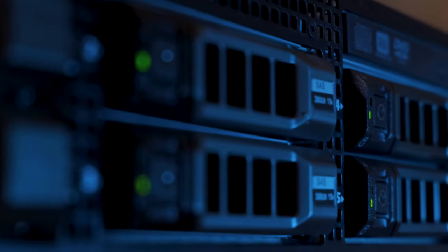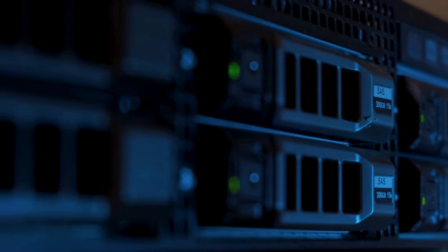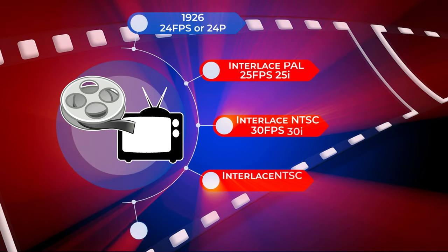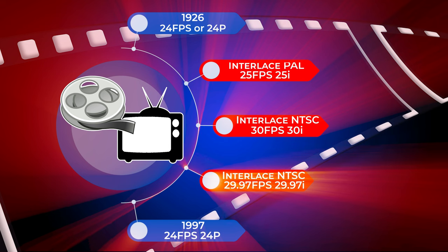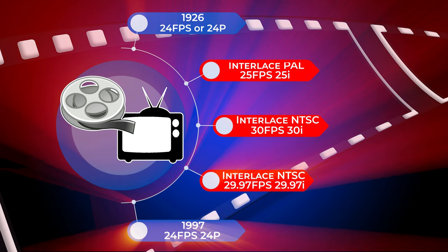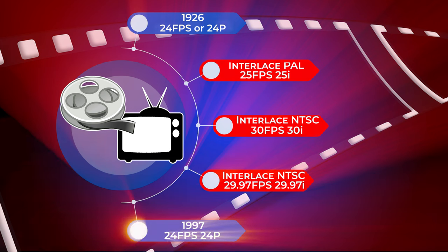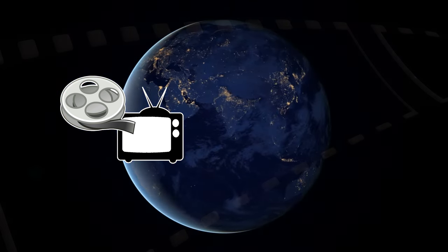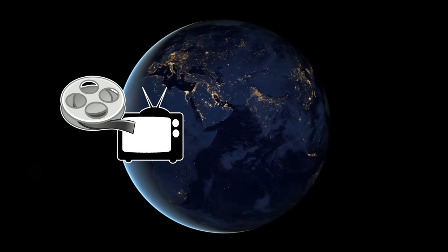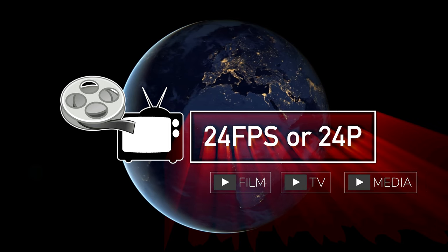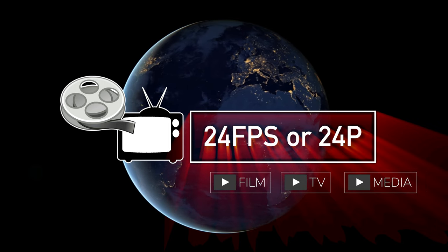In summary, film had established 24 frames per second, or 24P, as the standard in 1926. Television, on the other hand, could not reproduce the same experience and created interlaced technology until the advent of the 24P non-linear standard in 1997. This would finally allow content creation to be produced in one universal format with the ability to distribute film, TV, and or media to any region without any frame rate conversion.